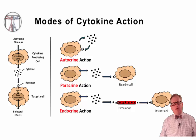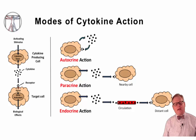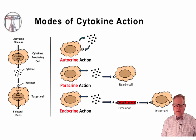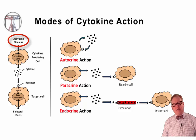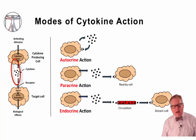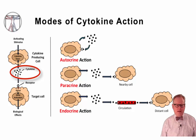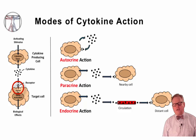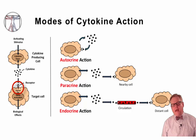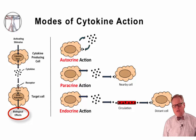Cytokines and chemokines have three major mechanisms of action. Following an activating stimulus, a cell is able to make cytokines. Those cytokines are secreted and they act on a receptor present on a target cell. When the cytokines act on that receptor, they send signals inside the cell to change the function of proteins and regulate gene transcription, and that leads to biological effects.